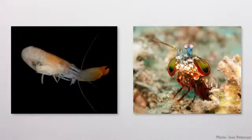The pistol and mantis shrimps are both crustaceans that snap their claws and perform magic. The jet of water squeezed out from between their claws travels at such speeds that it cavitates.